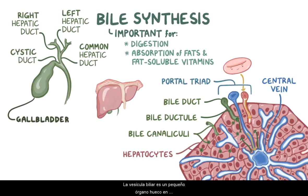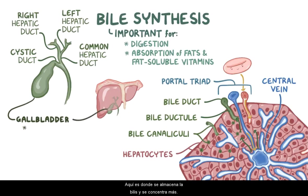The gallbladder is a small, pear-shaped, hollow organ located beneath the liver, and this is where bile is stored and becomes more concentrated.